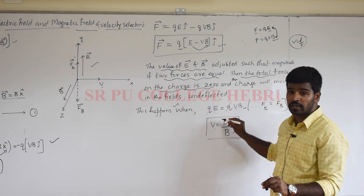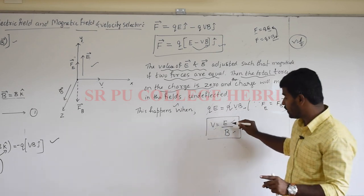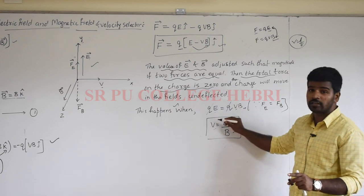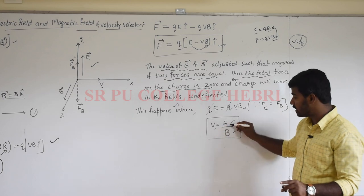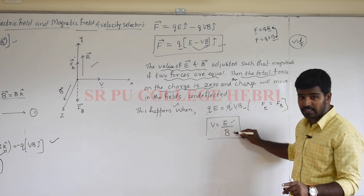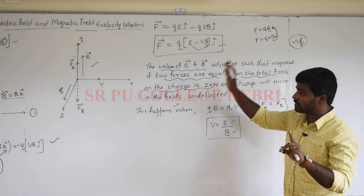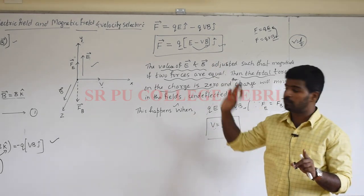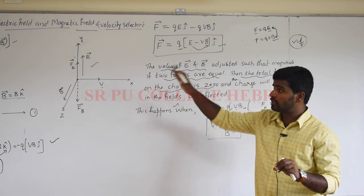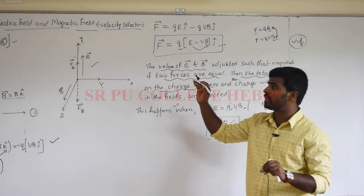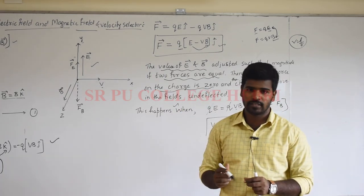To summarize: the velocity selector in case of electric field and magnetic field gives the velocity of the charged particle as v = E divided by B, where v is the velocity or velocity selector, E is the electric field, and B is the magnetic field. This concept is important for competitive exams. This is all about the motion of the charged particle in electric and magnetic fields along with the velocity selector. Thank you.